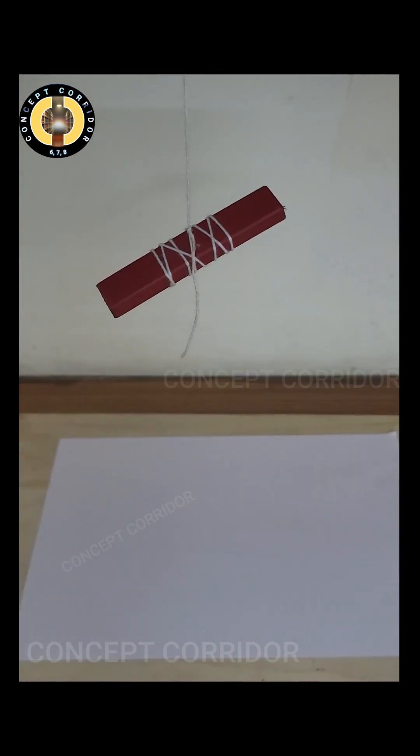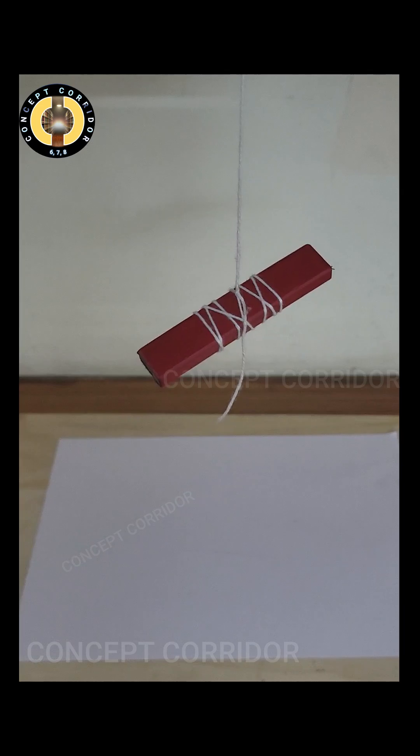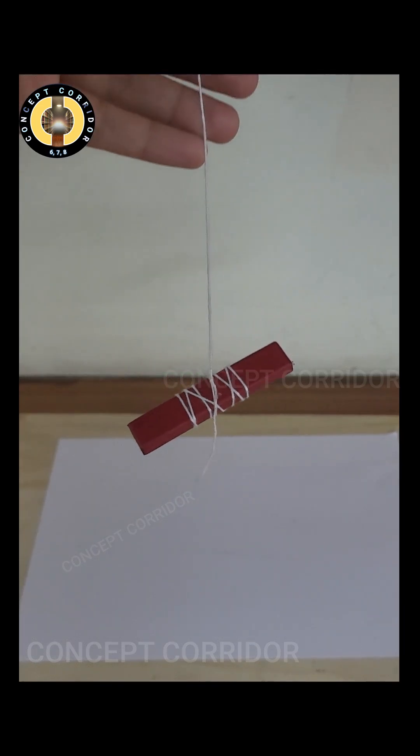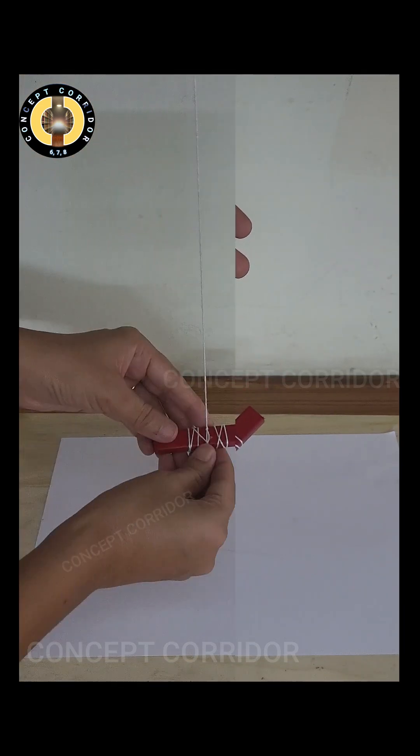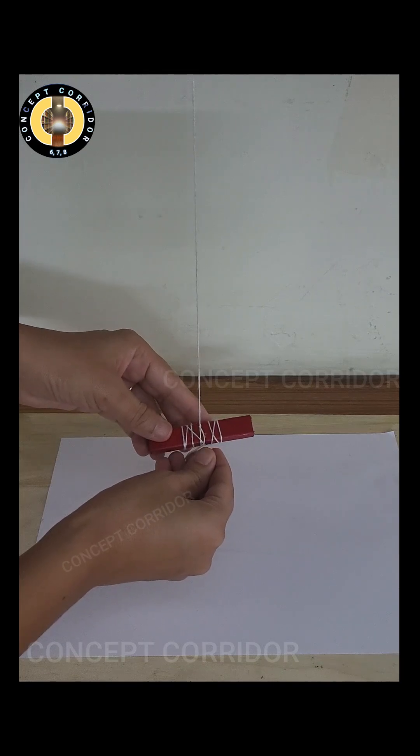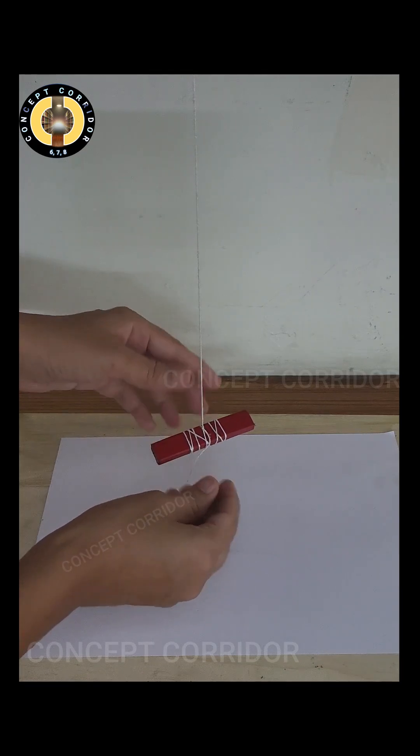Let's get started. First of all, tie the thread on this bar magnet and suspend it from one stable stand. Try to adjust the thread at the middle of this bar magnet so that it does not tilt in any one direction.